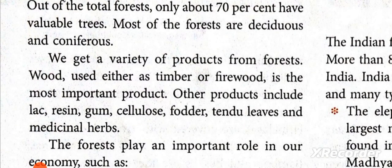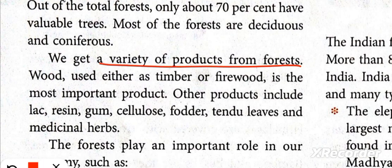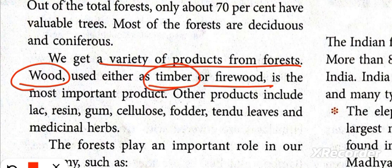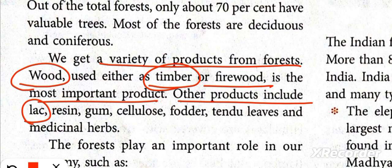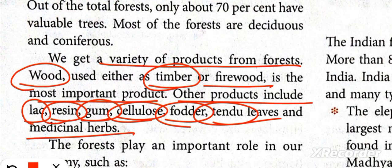We get a variety of products from the forest. The first and most important is wood, which can be used as timber or as firewood for burning. Other products include lac — used for making bangles — resin, gum, cellulose, fodder, tendu leaves — used for making bidi — and medicinal herbs.